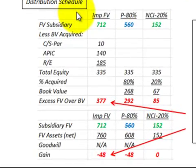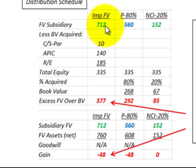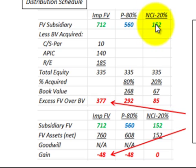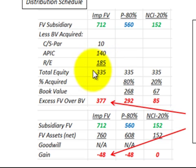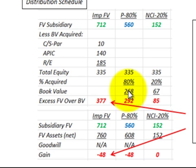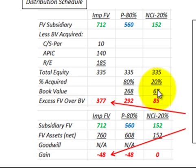Now let's look at our distribution schedule. Starting with the fair value of the subsidiary — the total fair value we calculated is $712,000. The parent's 80% portion was $560,000, and the non-controlling interest for 20% was $152,000. We subtract out the book value of the equity acquired from the subsidiary; that total equity was $335,000. The parent's portion is 80% of $335,000, or $268,000, and the non-controlling interest is 20% of $335,000, or $67,000.